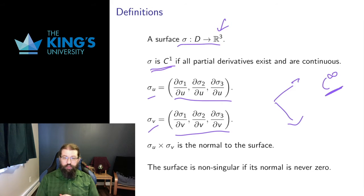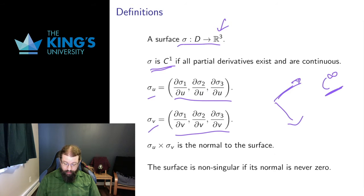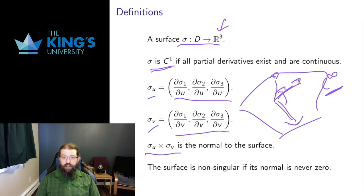With two parameters, you can think of two independent directions of movement along the surface: you can move in the U direction and in the V direction. Each of those directions gives a tangent vector, and these two tangent vectors will in fact span the tangent plane of the parametric surface. So their cross product should be the normal — and that is exactly the case. The cross product of these two tangent vectors is the normal.